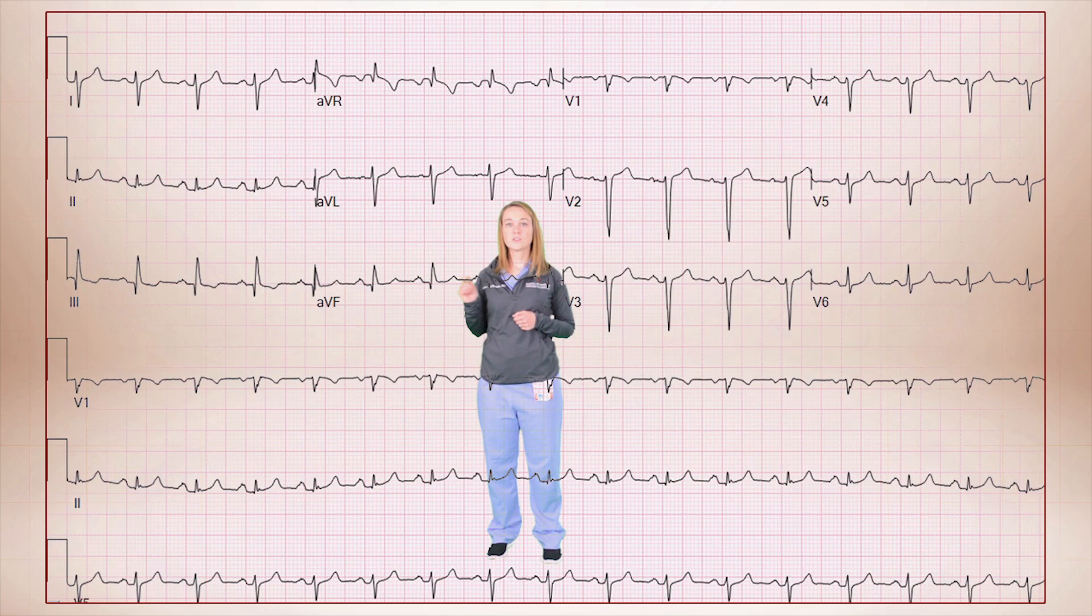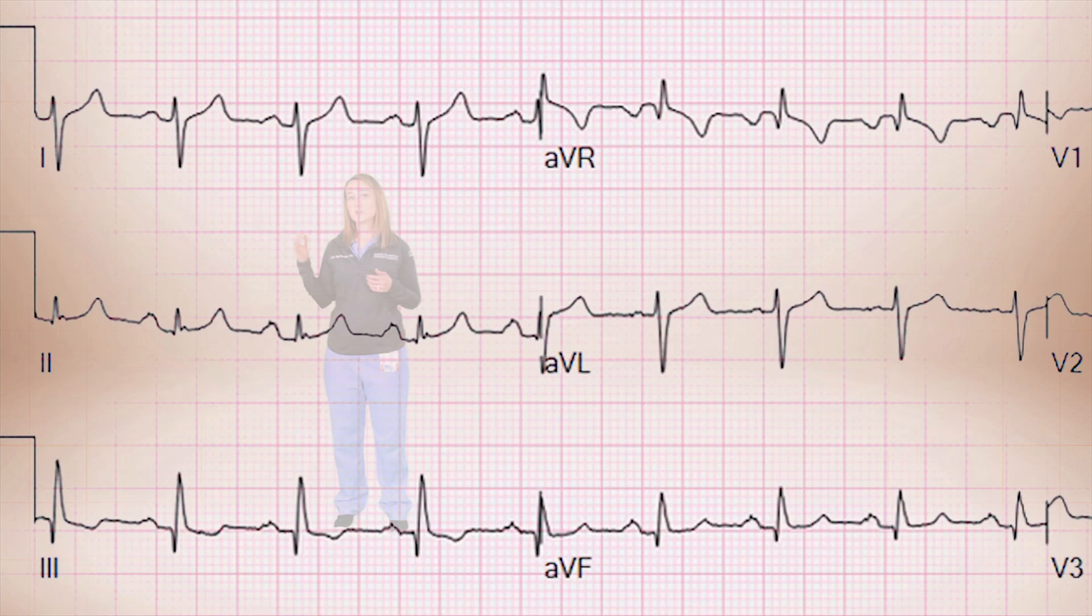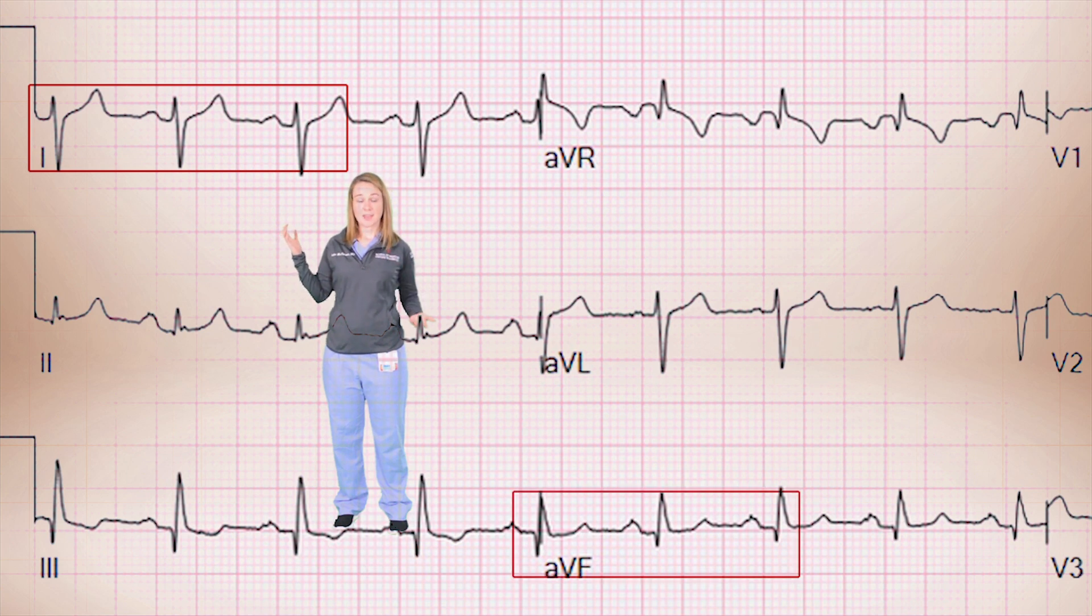Now that you've got the skills, let's take a look at another EKG. This one has a different axis deviation. So just like Mark taught us, we're going to focus in on those limb leads. So let's zoom in on 1 and AVF. So in 1, we have mostly a downward deflection, that predominant S wave. And then in AVF, we see that it's mostly upright with a tall R wave. This is a right axis deviation.